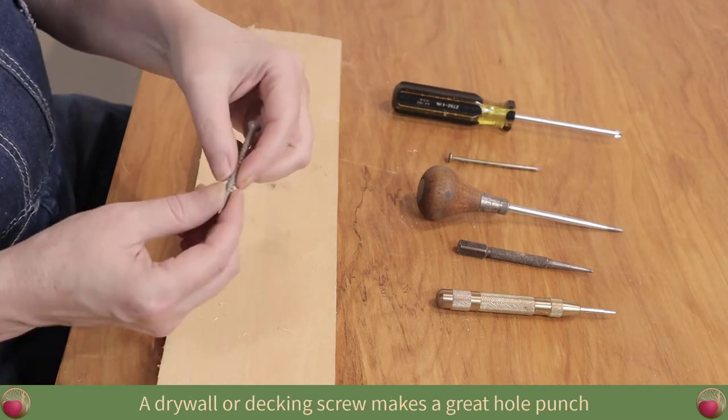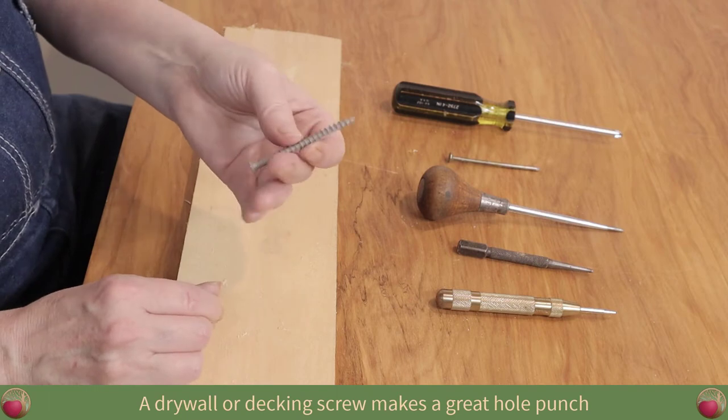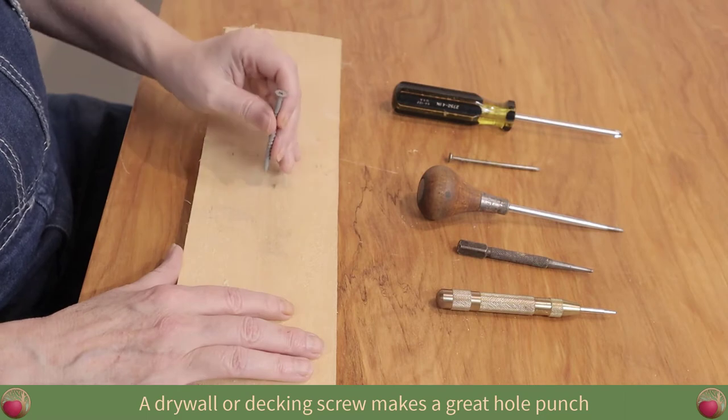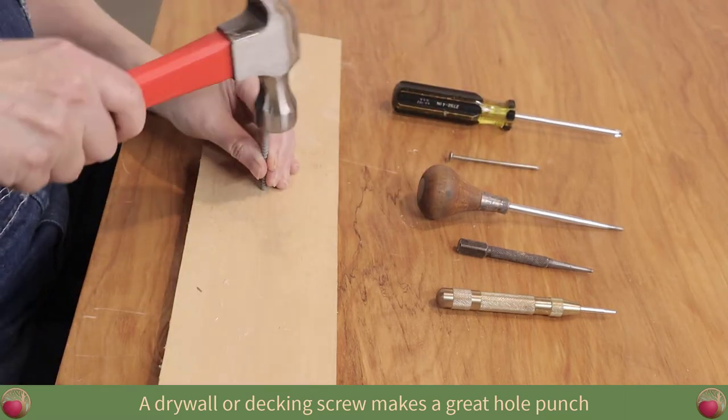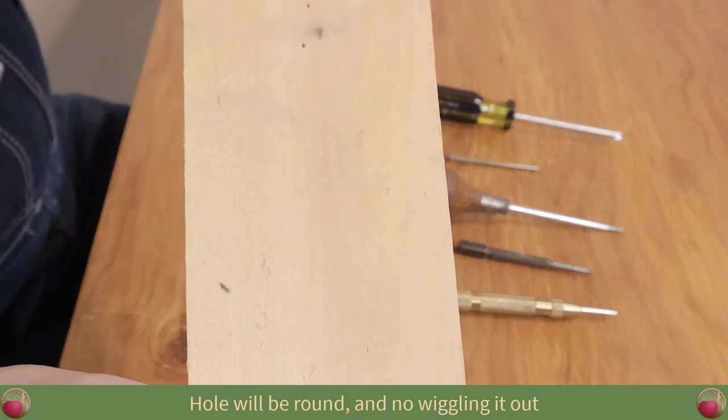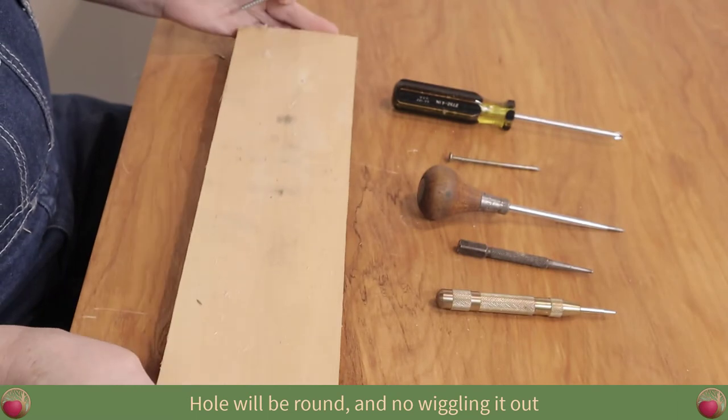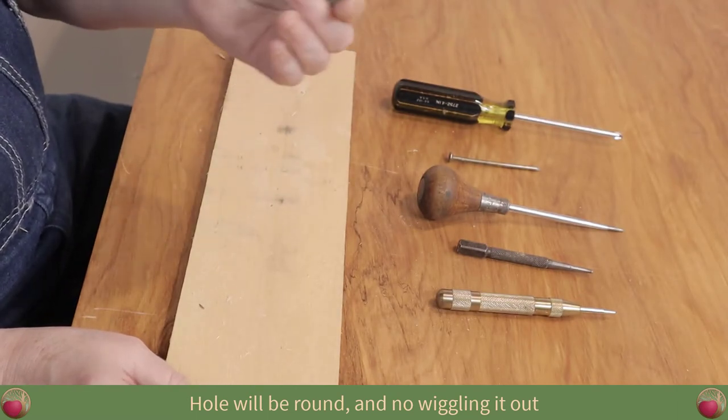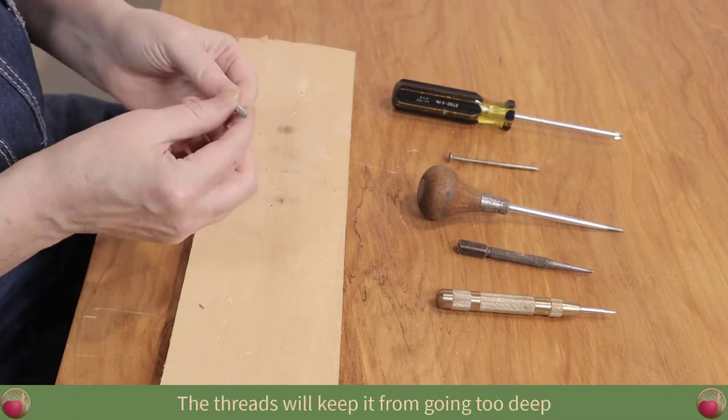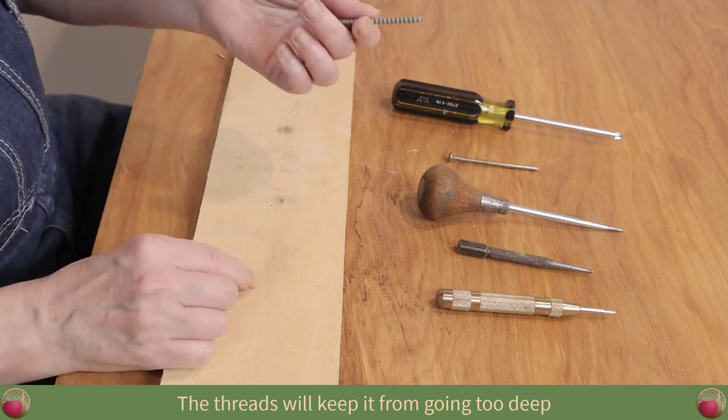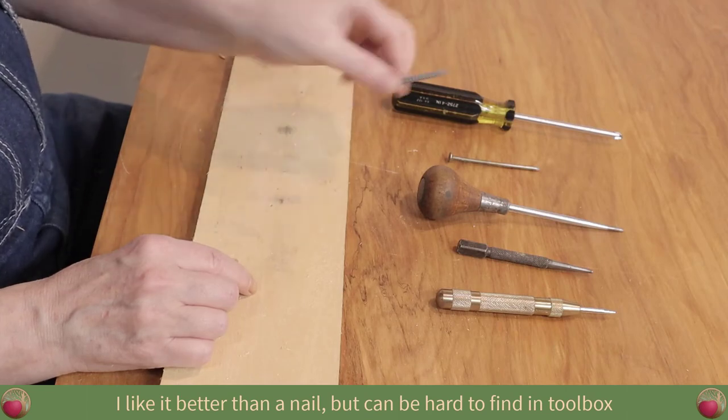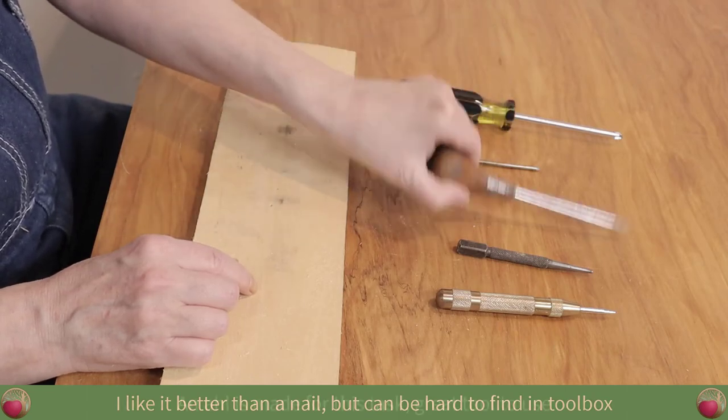Now, the other thing, if you can't find a nail, is some kind of drywall or decking screw because it is going to have a really sharp point on it. And it can definitely take hammering. So again, you don't have to hit it very hard. And it's going to make a nice round point. And it's not really made to hold in the wood so well. So you don't really have to jiggle it too much to get it out of there and make a decent hole. Plus, the threads on it are going to kind of stop you from going too deep anyway. So if you're going to use something like this between the nail and the screw, I'd rather use the screw for doing that.